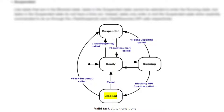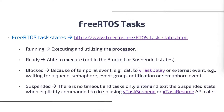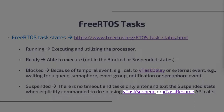If a task is blocked, this can be caused by a temporal event — for example, a call to vTaskDelay — that causes the task to be placed into the blocked state until the delay period has expired. It can also be blocked due to an external event, such as waiting to receive from a queue, event group, notification, or semaphore. This differs from the suspended state, where there is no timeout and tasks only enter and exit via explicit vTaskSuspend and xTaskResume API calls.